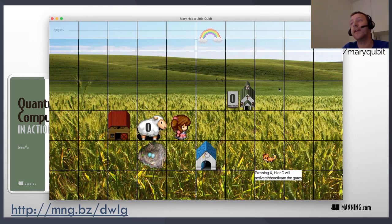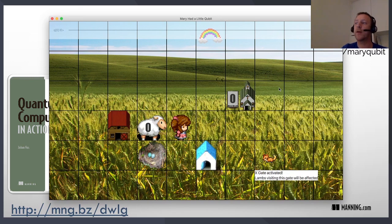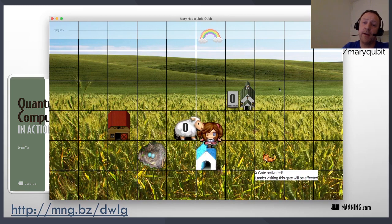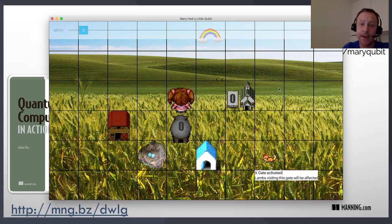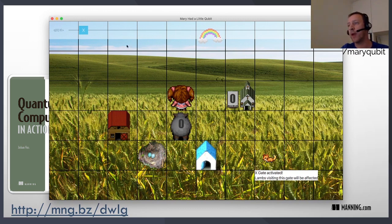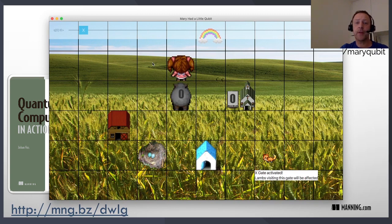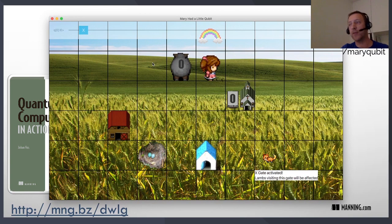These gates are quantum gates - the equivalent in quantum computing of classical gates but then applied to quantum computing. For example, when I press the X you see that the chicken coop is now highlighted. If I press X again it's disabled, and if I press X again it's enabled again. So this gate is now active. If Mary walks with the lamp through that gate you will see that lamp will change. It's now black and not white anymore. At the top of the screen you can see a quantum circuit. You don't need to know anything about that circuit right now. Just be aware that Mary is now walking with a qubit. So that is a bit. It used to be zero which is white and now it is one.